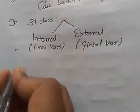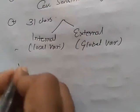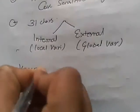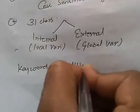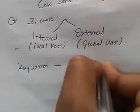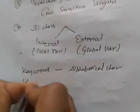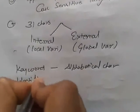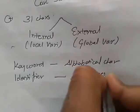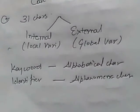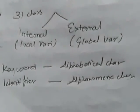We can say that a keyword is a combination of alphabetical character. But identifier is a combination of alphanumeric character. Keyword does not contain the underscore character, but the identifier contains the underscore character.